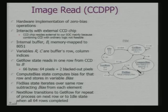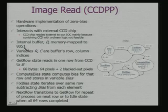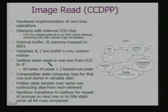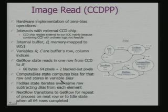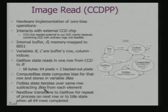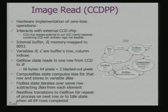The image read function operates similarly: an internal buffer B is memory-mapped to 8051. Variables for row and column indices are maintained. The 'get row' state reads one row from CCD, getting 64 pixels plus 2 blacked-out pixels. 'Compute bias' computes the bias for that row and stores it in a bias variable — averaging the two blocked pixels. 'Fix bias' iterates over the same row subtracting bias from each element, then transitions to get the next row. This FSM for bias error adjustment and memory read can be mapped into VHDL as dedicated hardware.